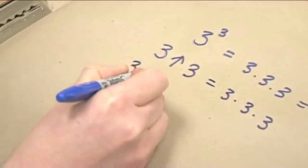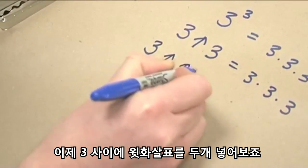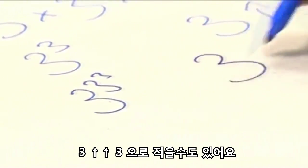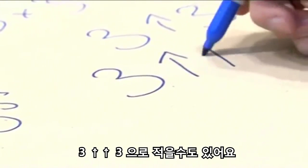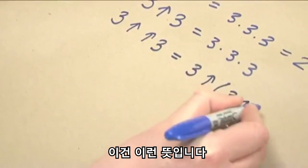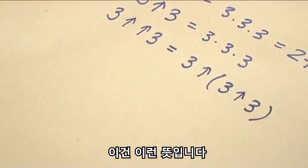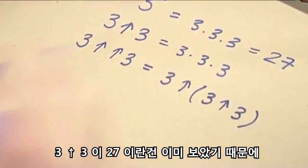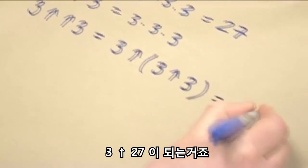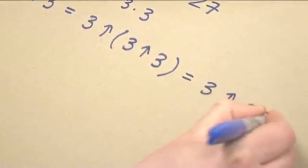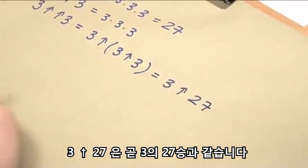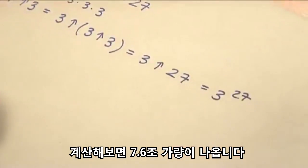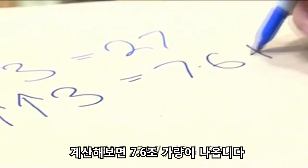Hopefully you're still with me. Now, what's 3 double-arrow 3? You do 3 to the power of 3 to the power of 3, which we write as 3↑3↑3. Now, 3↑3 we've already seen is 27, so this becomes 3↑27, which is 3 to the power of 27. If you actually work that out, it comes to around 7.6 trillion.